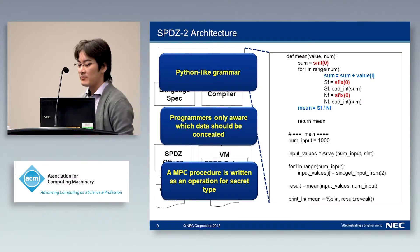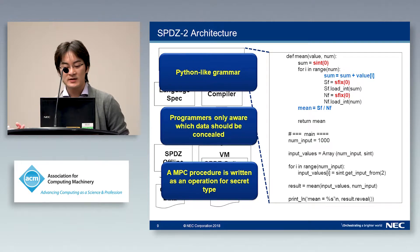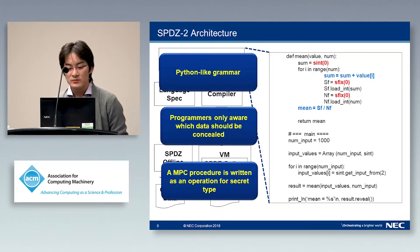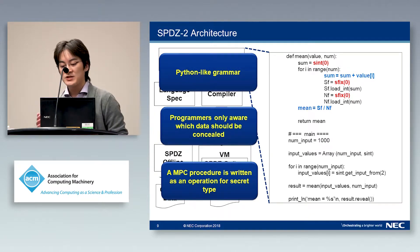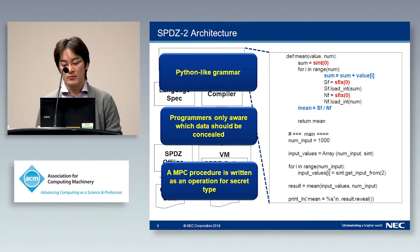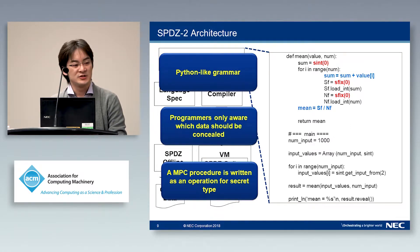In this code, secret values are distinguished by the type of the variable, like Sint or SFIX, which mean secret integer or secret fixed-point. The program's secret array values that should be concealed are written using these secret types, and the MPC procedure is written as operations on them. It appears to be standard Python operations, but it is compiled and performed as an MPC operation on the virtual machine.